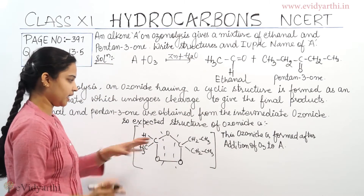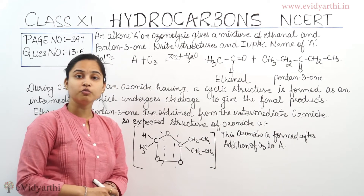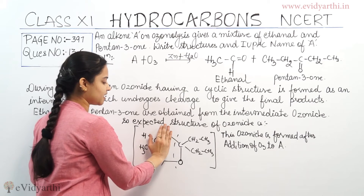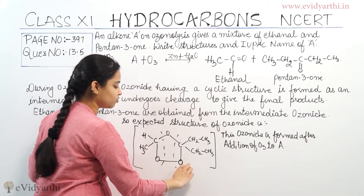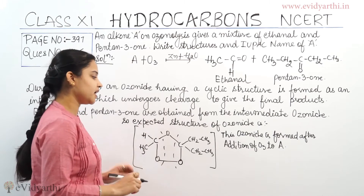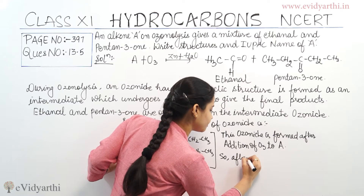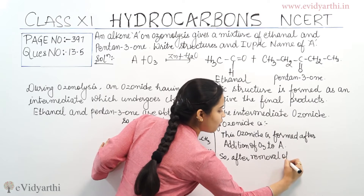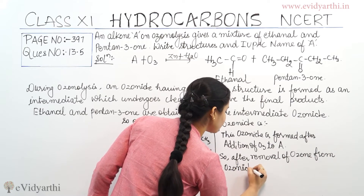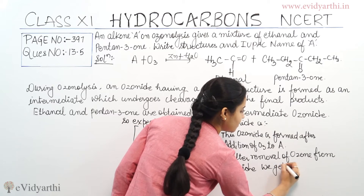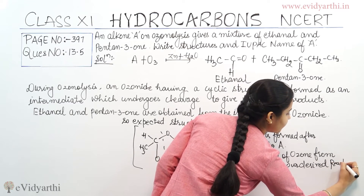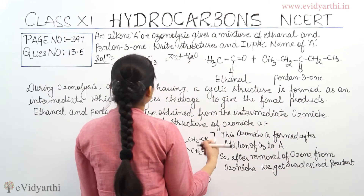So the desired product — alkene A — can be obtained by the removal of ozone from the ozonide. If we remove the ozone molecules, the oxygen-containing parts from this ozonide, then we get our desired reactant, which is the alkene A. After removal of ozone from the ozonide, we get our desired alkene A.